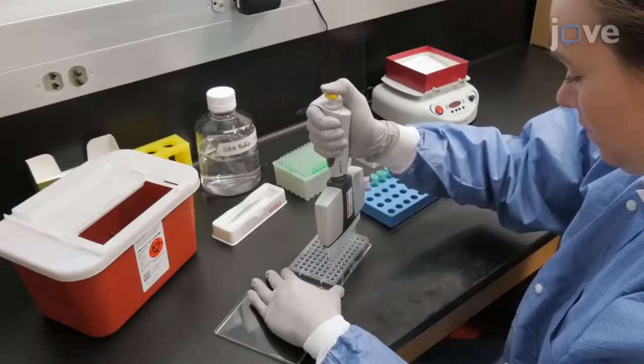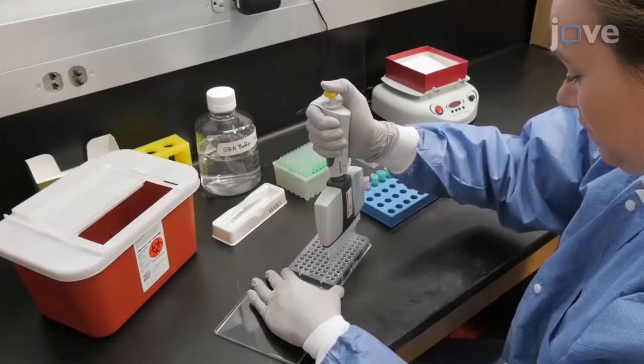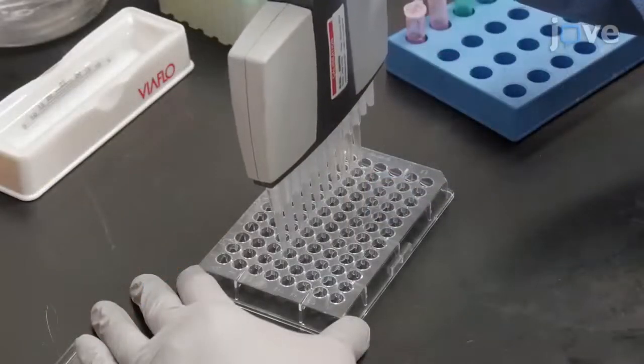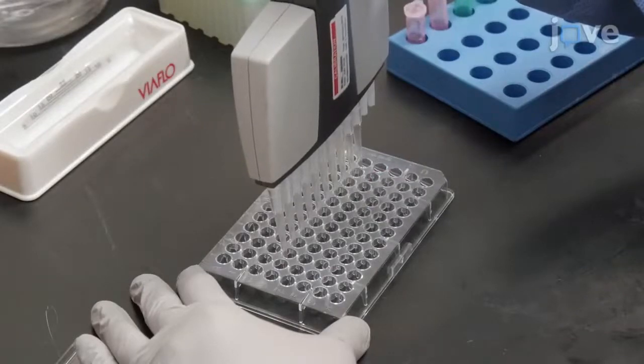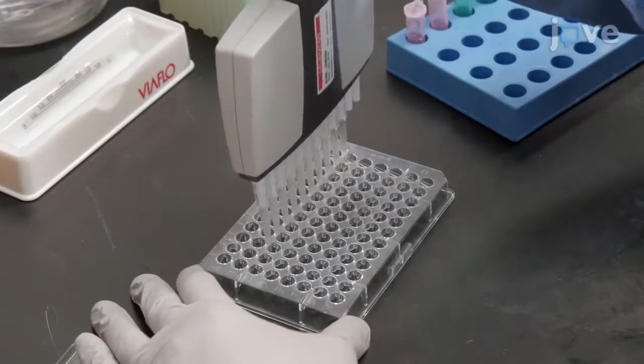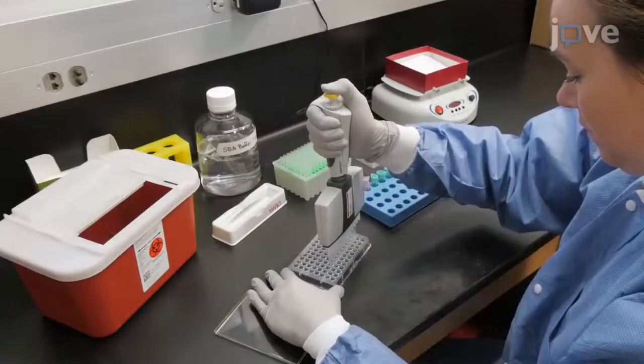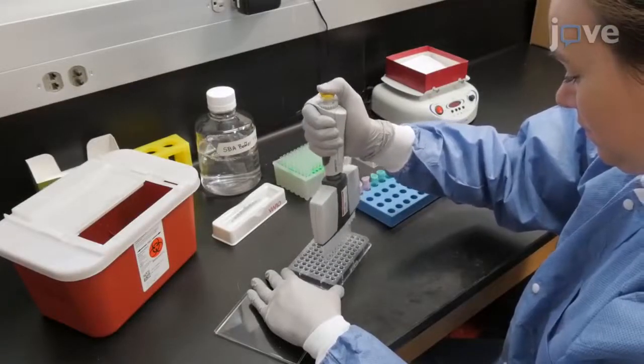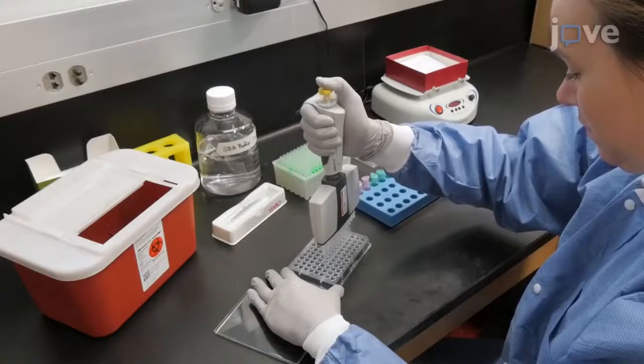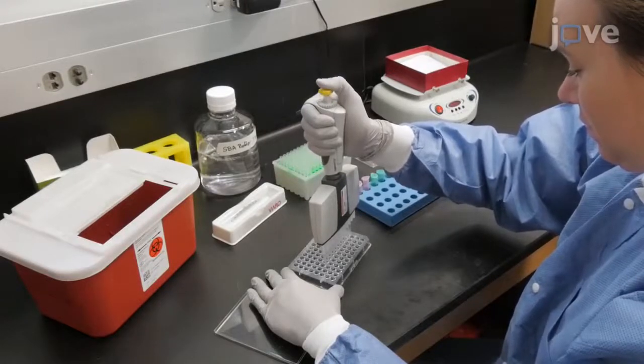Transfer the samples to the corresponding wells in row G and pipette up and down 8 to 10 times to mix the sample well. Then, remove 10 µL from these wells, transfer to the corresponding wells in row F, and pipette up and down 8 to 10 times to mix.